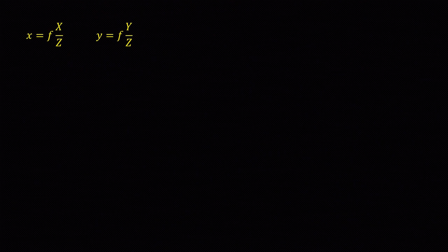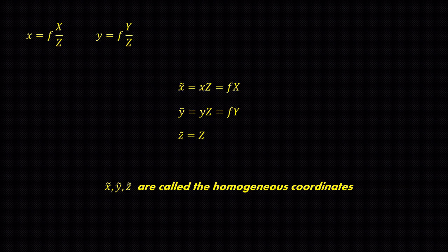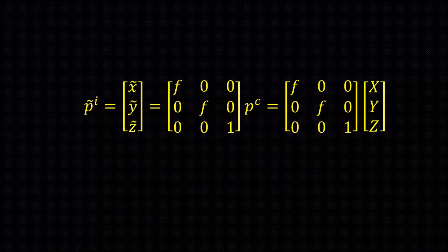Now, we will multiply the coordinates with the distance z. Thus, we will get the homogeneous coordinates. We will discuss more on homogeneous coordinates on another video. For now, let's just say that x tilde, y tilde and z tilde represent the homogeneous coordinates in the image plane.